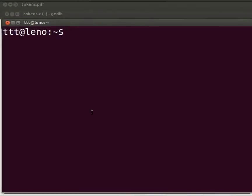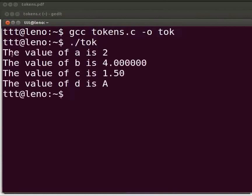To compile type: gcc tokens.c -o tok. Press enter. To execute type: ./tok. The output is displayed.